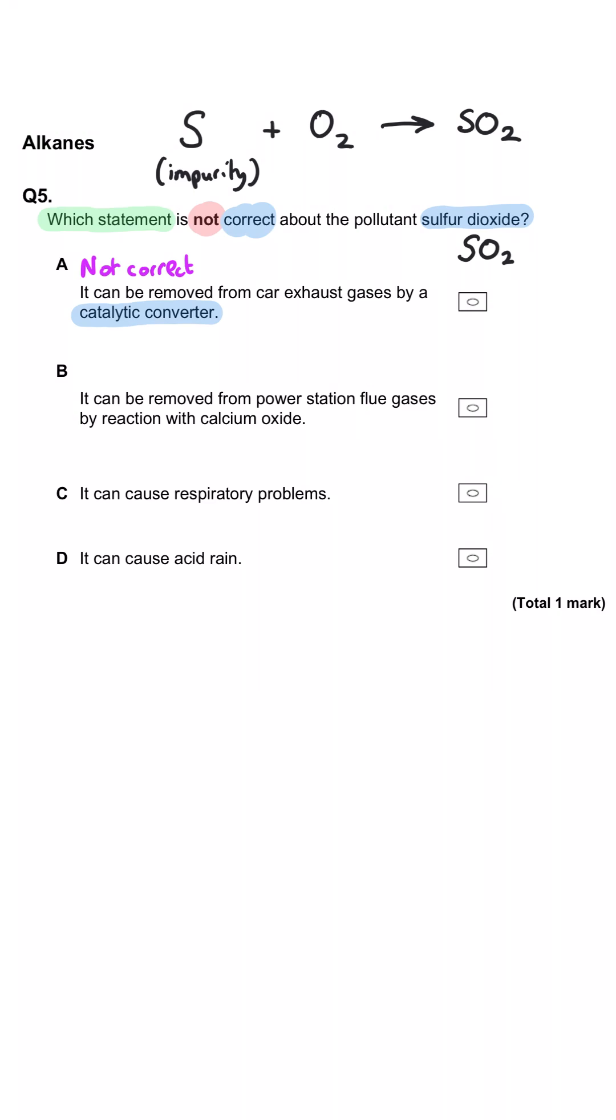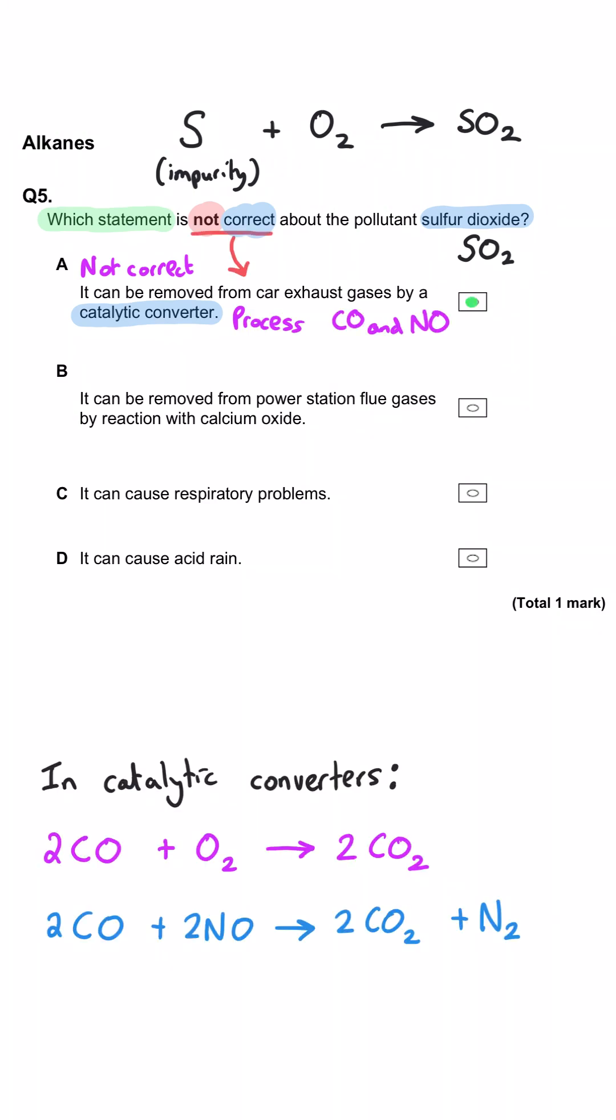This is not a correct statement because the catalytic converters mostly process the oxides of nitrogen and carbon monoxide, making them less harmful when they're emitted from the car exhausts.